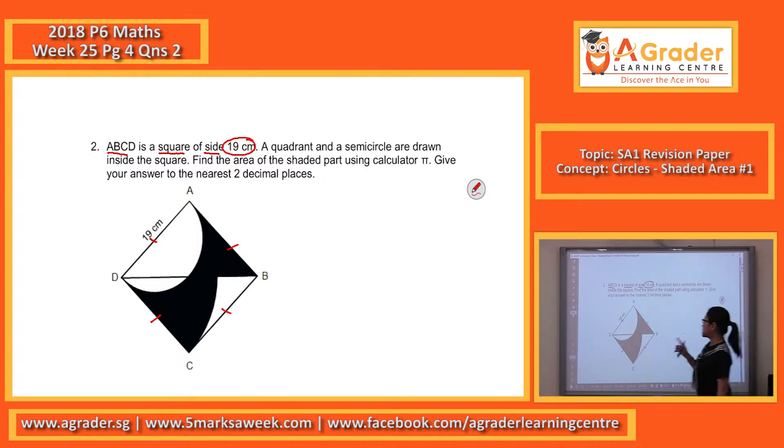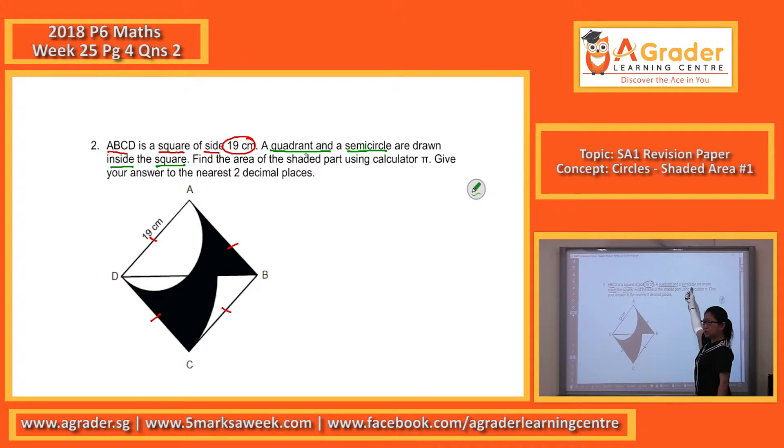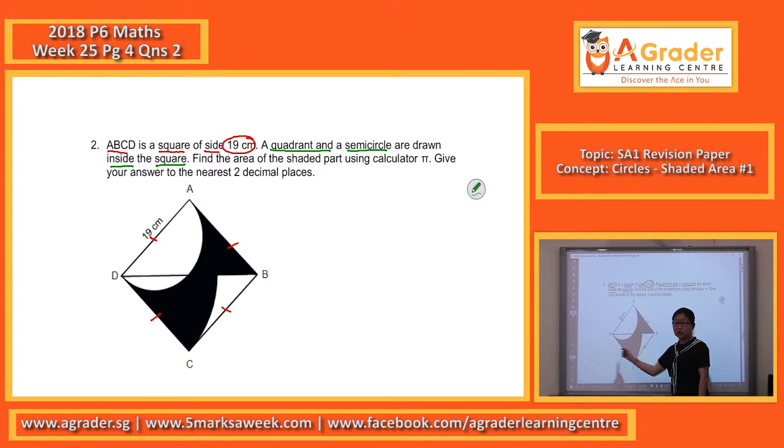The diameter of the semi-circle. It's the semi-circle, obviously. A quadrant and a semi-circle are drawn inside the square. When they tell me there's a quadrant and there's a semi-circle, the obvious one that you can see is the semi-circle, right? Then where's the quadrant?